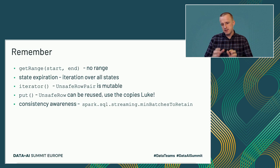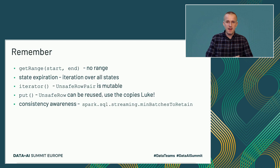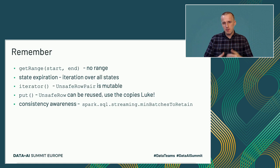The next point is about consistency awareness. There is one configuration property involved in many places in structured streaming called minBatchesToRetain. It represents the number of metadata entries related to micro-batches retained in the checkpoint location. It applies to the state store presented in this talk, but also to metadata files like commits and offsets. It's better to keep these two aligned, otherwise it can be complicated to restart your application in case of failure without problems.